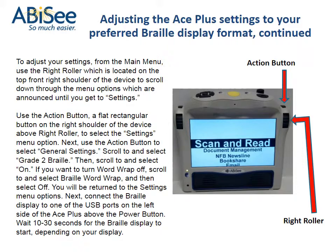Scroll to and select Grade 2 Braille, then scroll to and select On. If you want to turn Word Wrap off, scroll to and select Braille Word Wrap, and then select Off. You will be returned to the Settings menu options. Next, connect the Braille display to one of the USB ports on the left side of the Ace Plus above the power button. Wait 10 to 30 seconds for the Braille display to start, depending on your display.